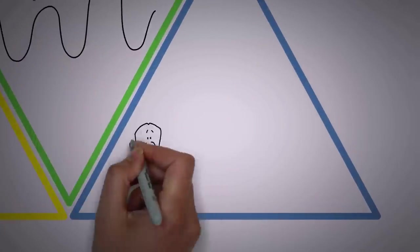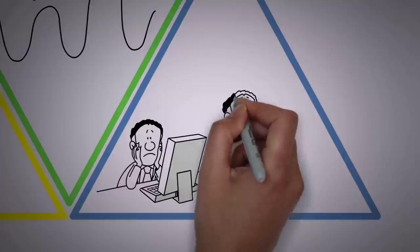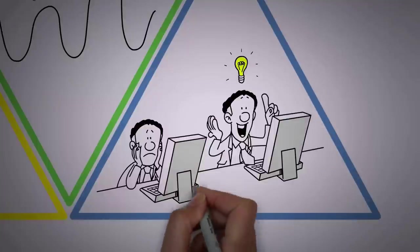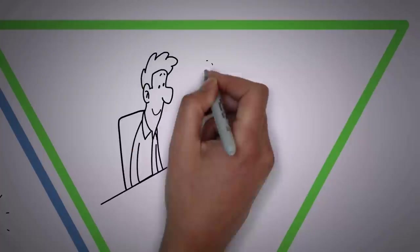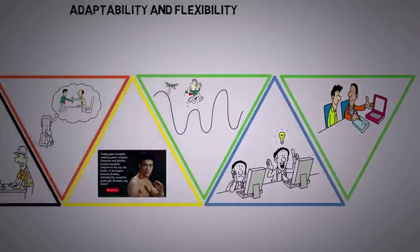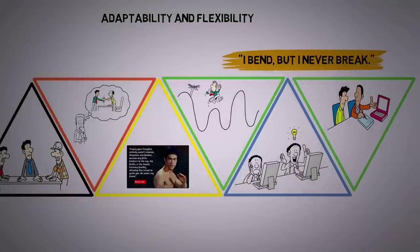A Sigma male understands that adaptability and flexibility are not signs of weakness but strengths that enable them to find innovative solutions in difficult situations. They remain open-minded, willing to learn and unlearn, and readily embrace change. They live by the phrase: I bend, but I never break.